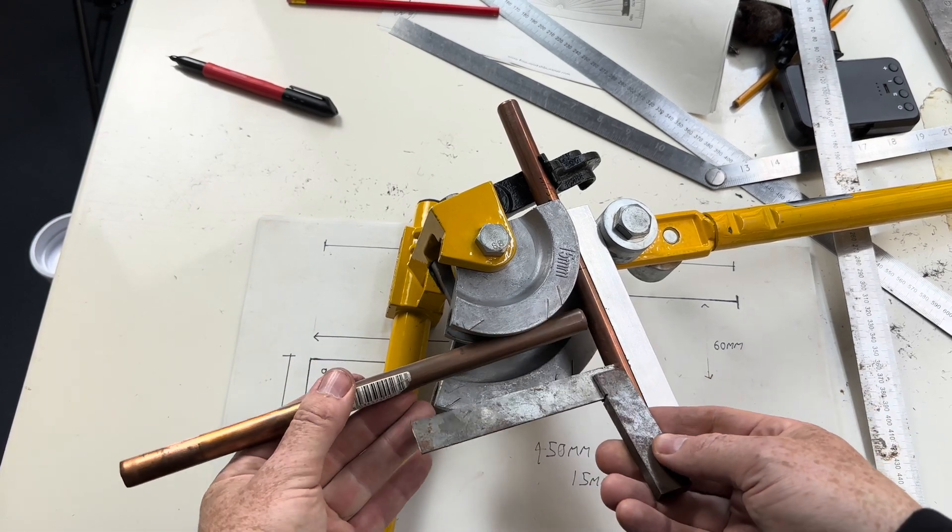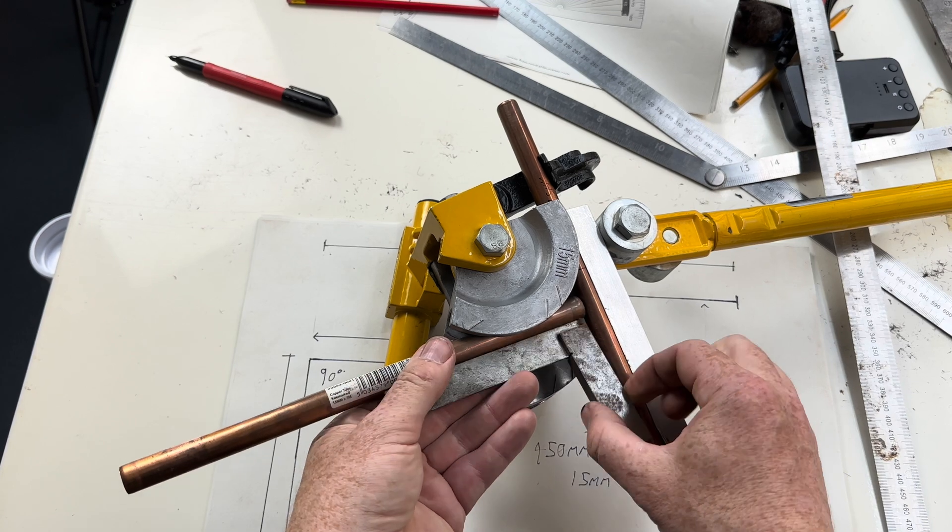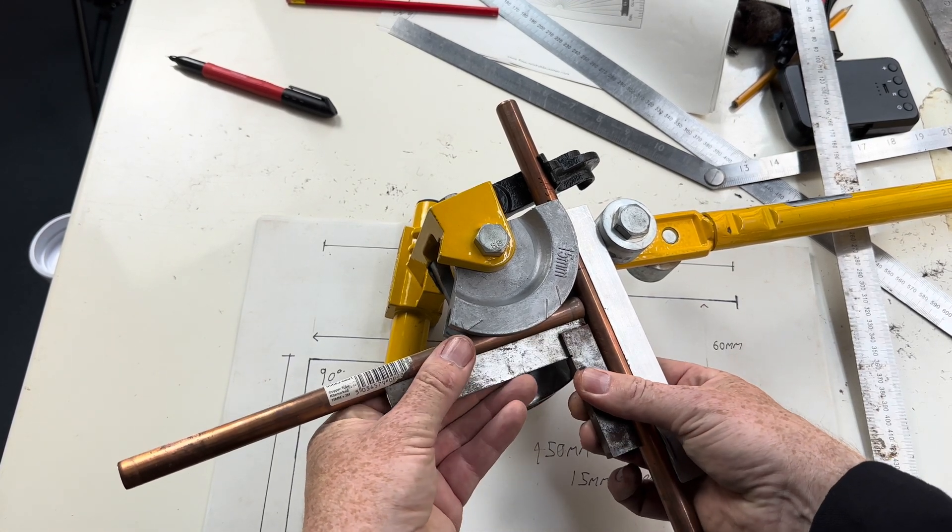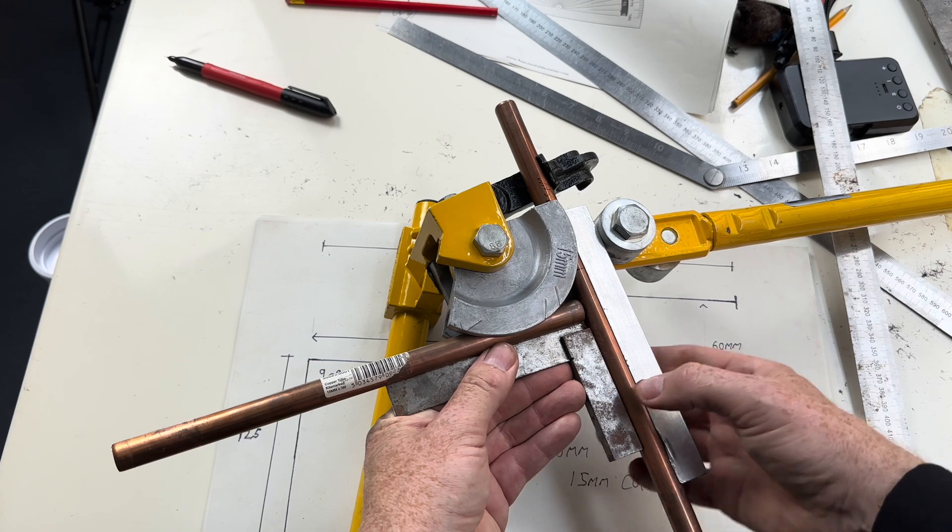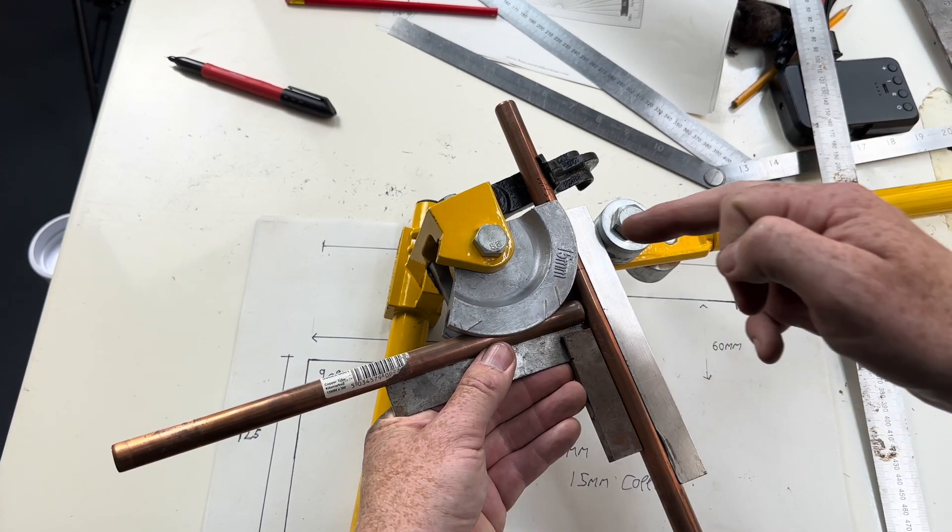Then using a square and a piece of 15mm pipe we put a square and pipe onto the former like this and this is what a 90 degree bend will look like.